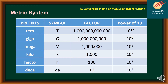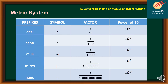A while ago we talked about conversion between English and metric systems. The use of the metric system is recommended because computations are easier — it uses powers of 10, and there are prefixes that describe each power of 10. For example, the prefix kilo has the symbol k, a factor of 1,000, and a power of 10 to the third. On the other hand, centi has the symbol c, a factor of 1 over 100, and a power of 10 raised to negative 2.